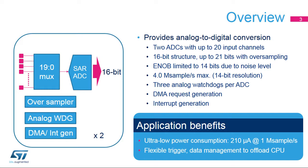The sampling speed is 4 megasamples per second for 14-bit resolution. Each ADC module integrates an analog watchdog. The data can be made available either through DMA movement or interrupts. This ADC is designed for low power and high performance.